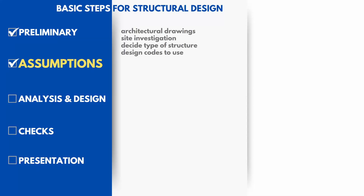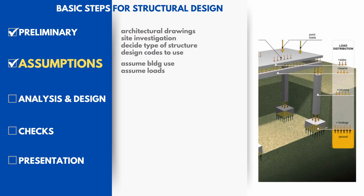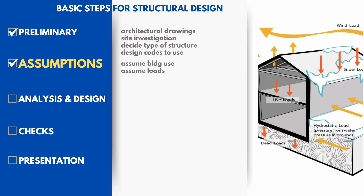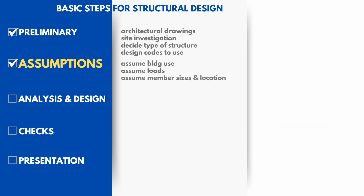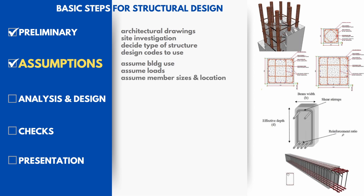Assumptions. First we need to assume the building use and maybe any future possibilities. Come up with all the different loads that would be imposed on the building — self-weights, dead loads, live loads, wind and snow loads, seismic loads, etc. Based on experience, we can assume preliminary sizes for the structure members: column sizes and spans, beam sizes, slab depths.